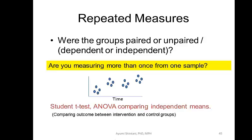So instead of t-tests, you might use a paired t-test. And instead of a linear regression, you might use a mixed effects model or GEE — these are regressions that account for repeated measurements.